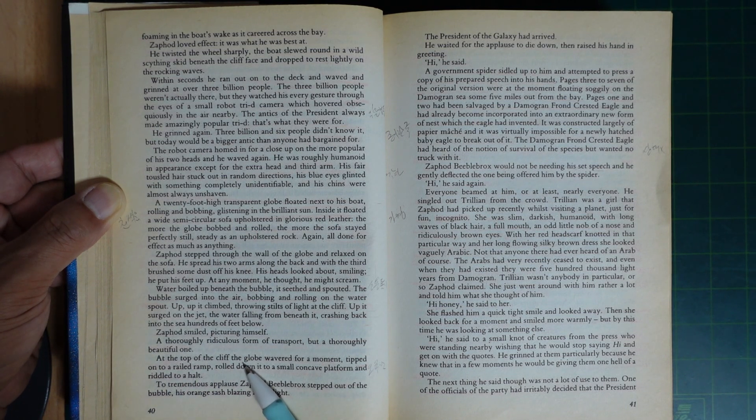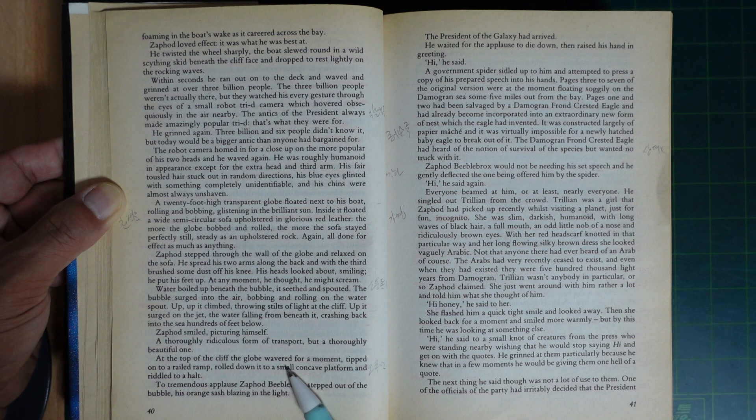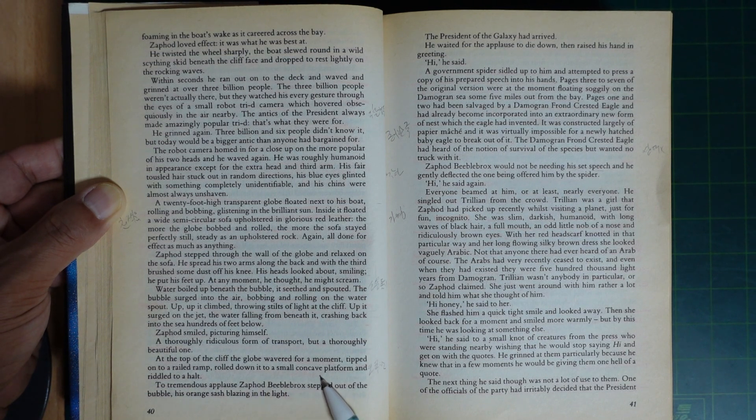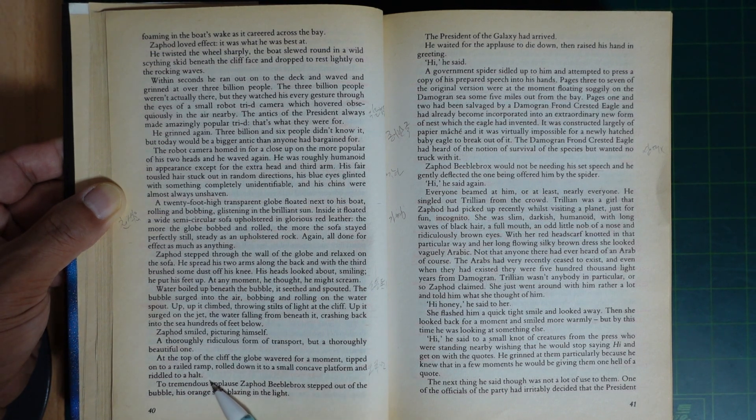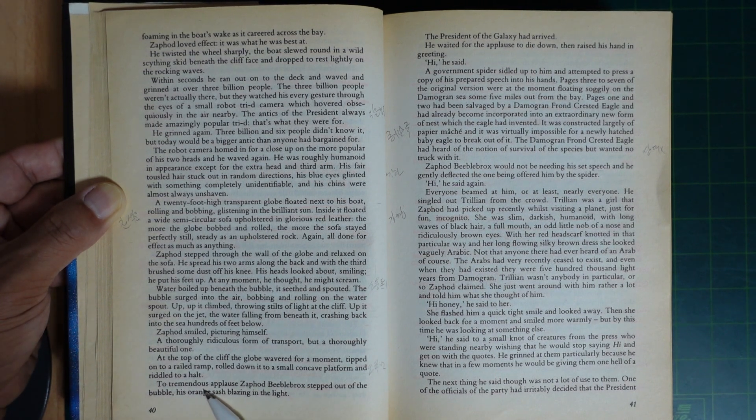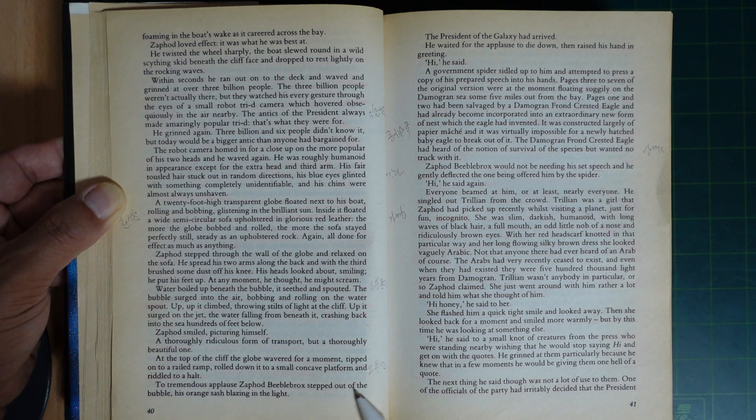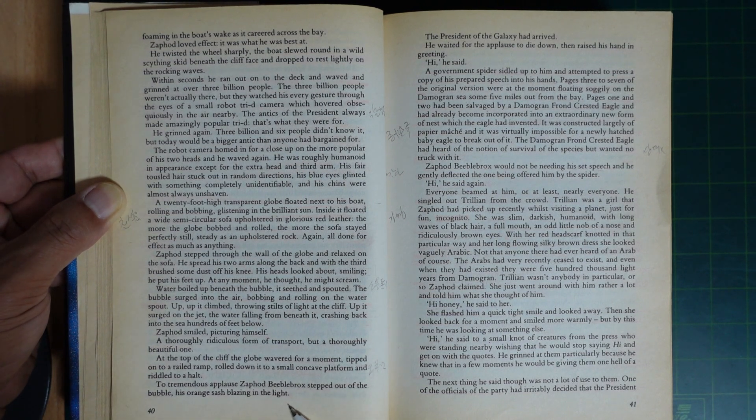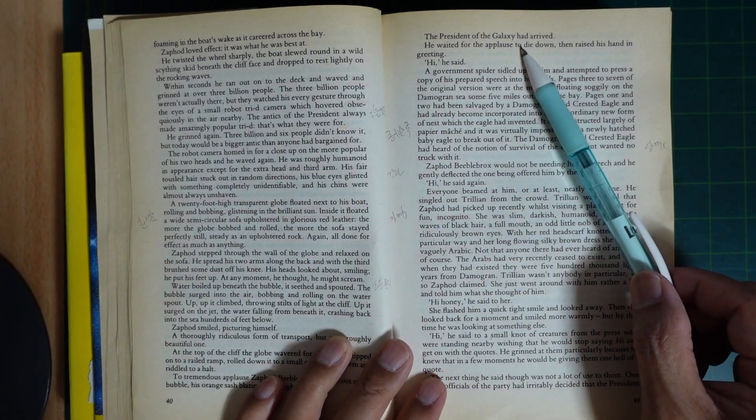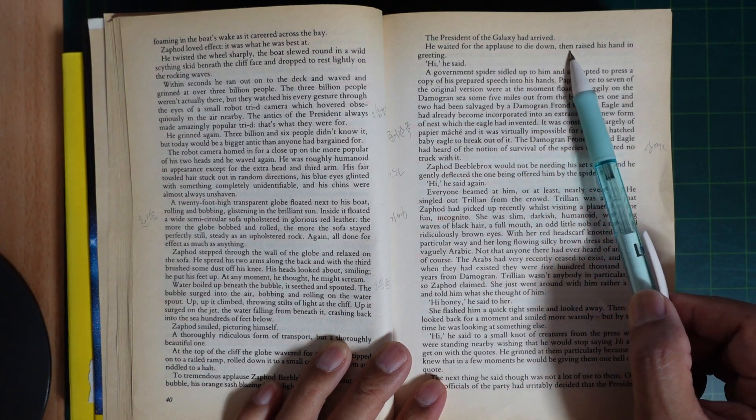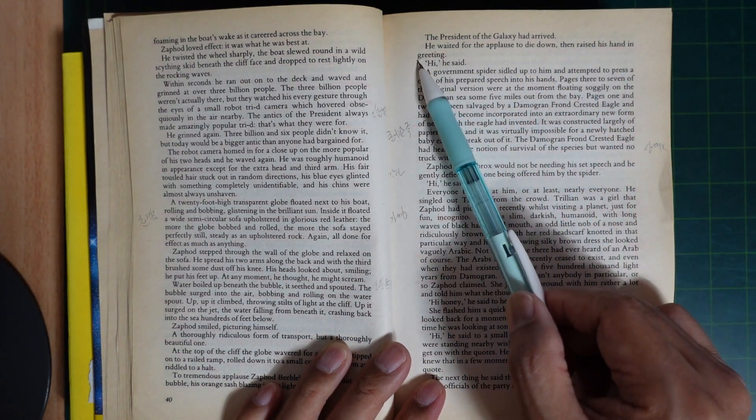At the top of the cliff, the globe wavered for a moment, tipped onto a railed ramp, rolled down into a small concave platform and riddled to a halt. The tremendous applause died. Zaphod stepped out of the bubble, his orange sash blazing in the light. The President of the Galaxy had arrived. He waited for the applause to die down, then raised his hand in greeting.